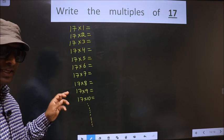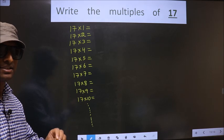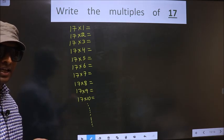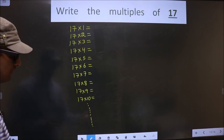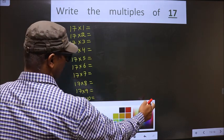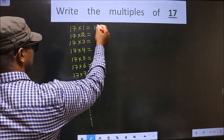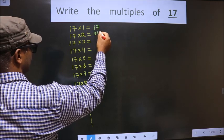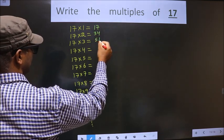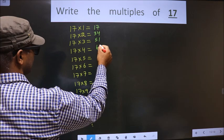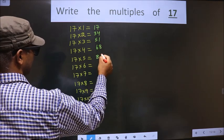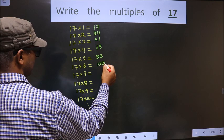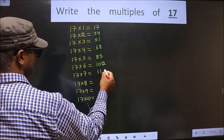But here I am writing only the first 10 multiples of 17, and they are: 17 into 1 is 17, 17 into 2 is 34, 17 into 3 is 51, 17 into 4 is 68, 17 into 5 is 85, 17 into 6 is 102, 17 into 7 is 119.